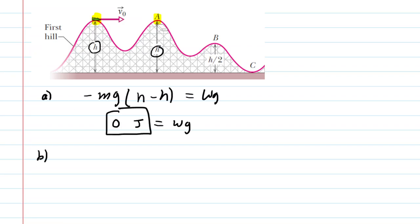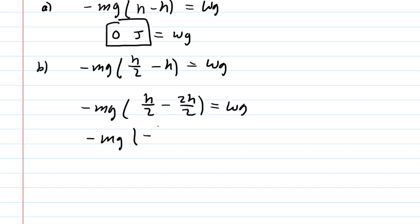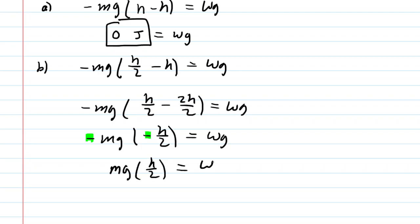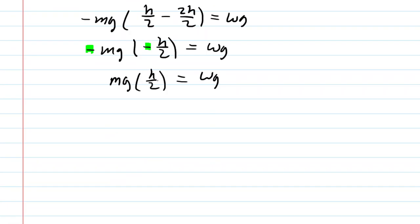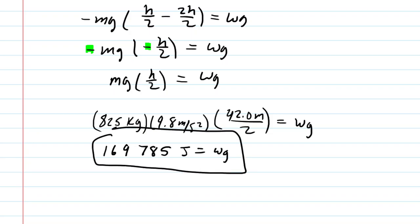In part B, the roller coaster cart is moving from that initial point to point B. In that case, the final height is H divided by 2 and the initial height is H. Simplifying inside the parentheses with a common denominator: H/2 minus 2H/2 gives negative H/2. The two negatives cancel, leaving MG times H/2. Plugging in the mass, G, and H, we get 169,785 joules. This is the correct answer to part B.